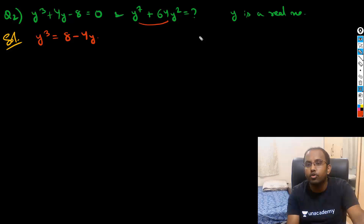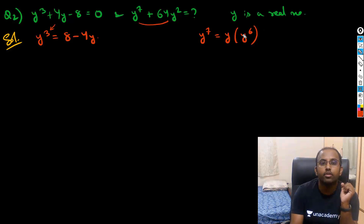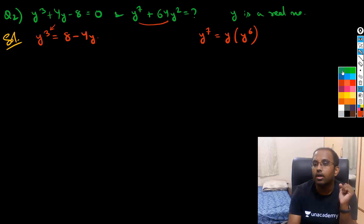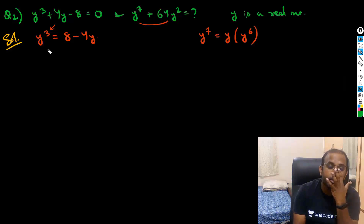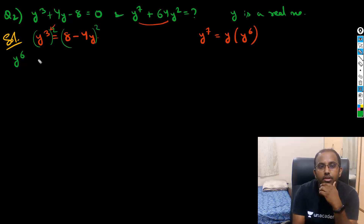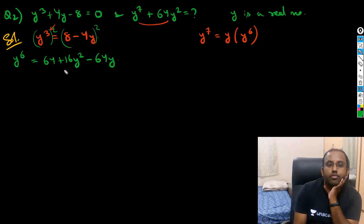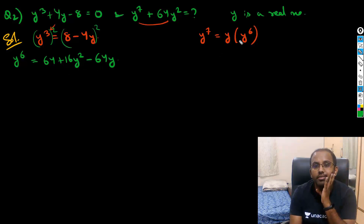We can reduce y⁷ as y⁷ = y · y⁶, because I have a cube form, so I can get power 6 from here as well. Let's square it: y³ = 8 - 4y, so squaring both sides gives y⁶ = 64 + 16y² - 64y.